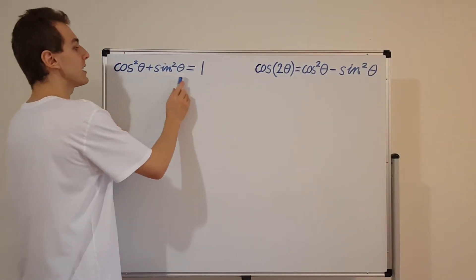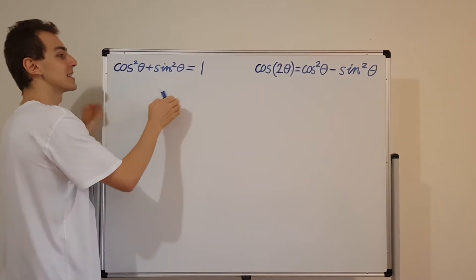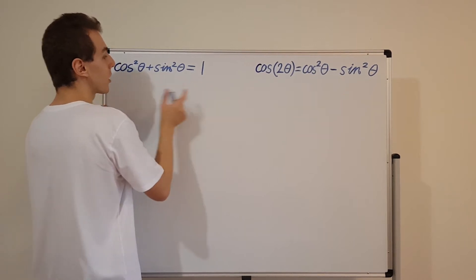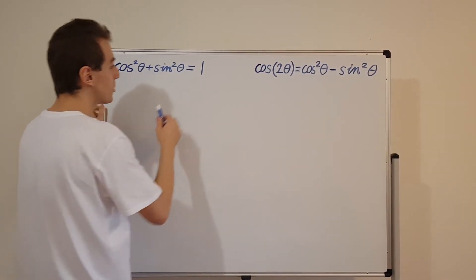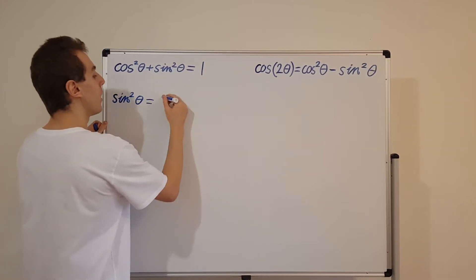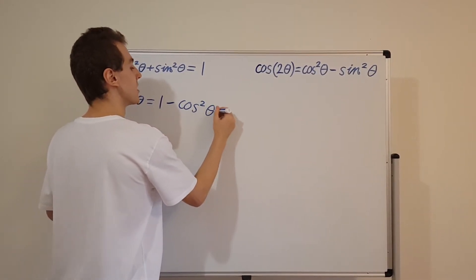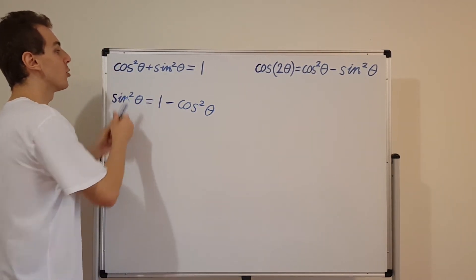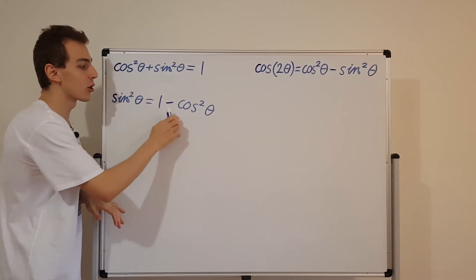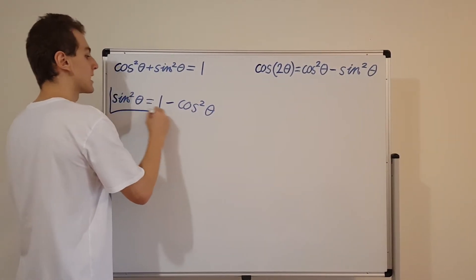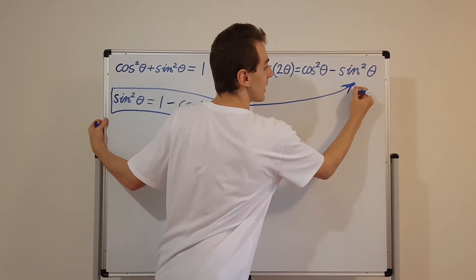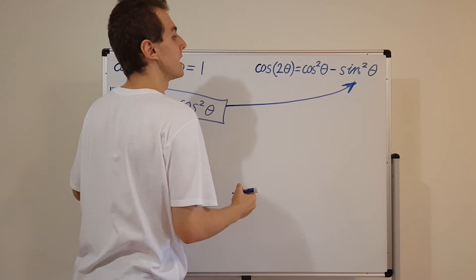So how are we going to get rid of sine? We can write the Pythagorean identity in terms of sine squared. We take cosine squared of θ and move it to the other side: sine squared of θ equals 1 minus cosine squared of θ. This is the exact same trigonometric identity — we've just subtracted cosine squared of θ from both sides. Now we're going to substitute this into the double-angle expression to get rid of sine squared of θ.